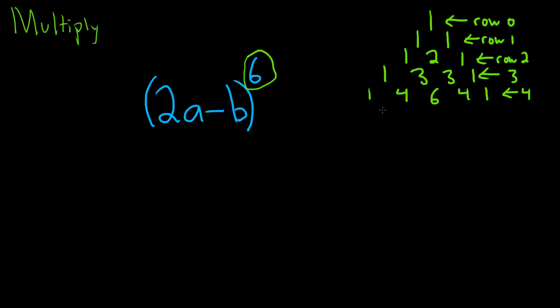Almost there. 1 plus 4 is 5. 4 plus 6 is 10. 6 plus 4 is 10. 4 plus 1 is 5. 1's on the sides. This is row 5. One more row, and we are there.